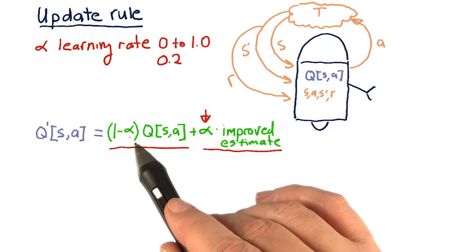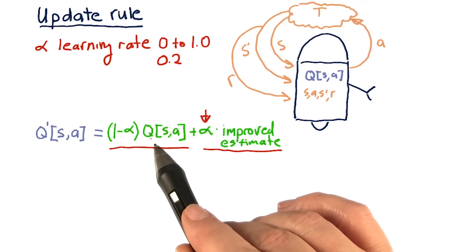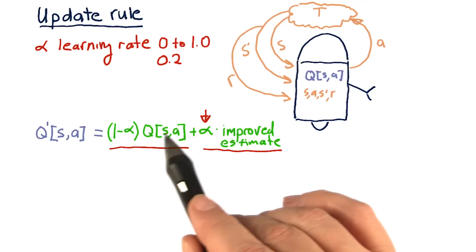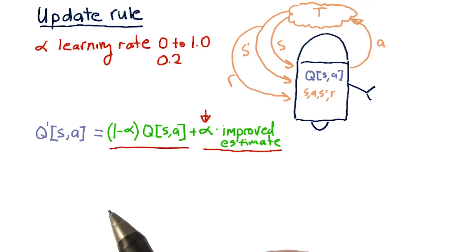So a low value of alpha, for instance, means that in this update rule, the previous value for Q of S A is more strongly preserved.